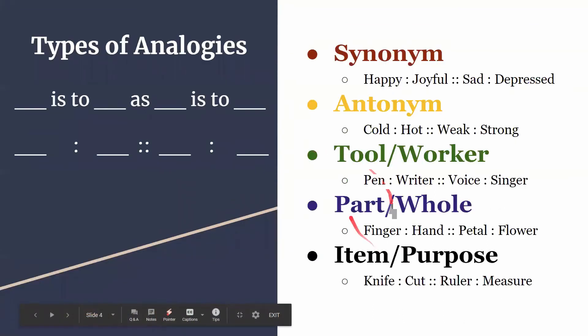Part is to whole. Finger is to hand as petal is to flower. A finger is a part of a hand and a petal is a part of a flower. Lastly, we have item and purpose. Knife is to cut as ruler is to measure. We use knives to cut things and we use rulers to measure things.